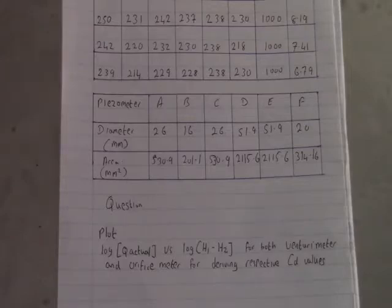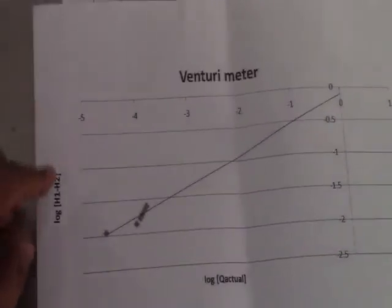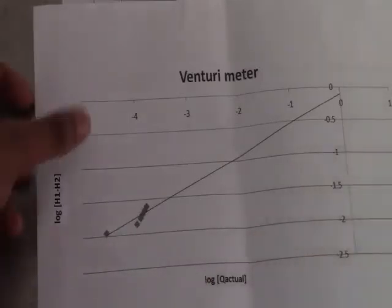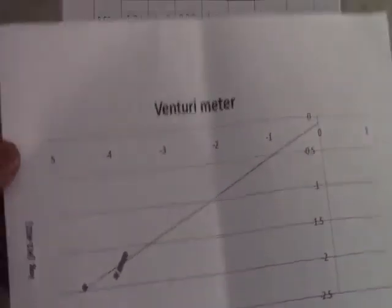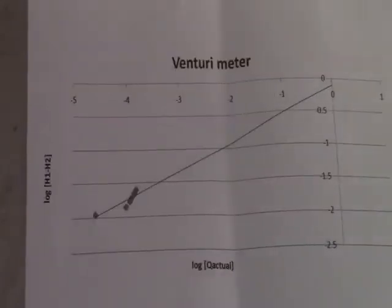Once all values are complete, we plot the graph for the venturi meter: the y-axis is log(H1 − H2) and the x-axis is log Q actual, drawing a best-fit line. In the next couple of videos, we will see the orifice meter calculations. I hope this is helpful — please subscribe and like our page.